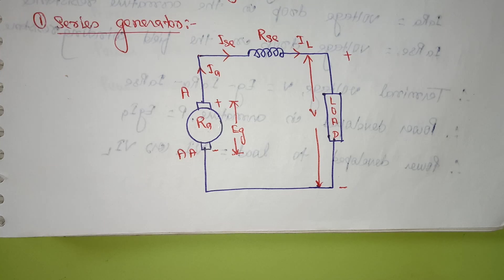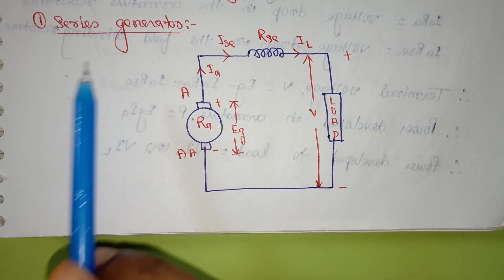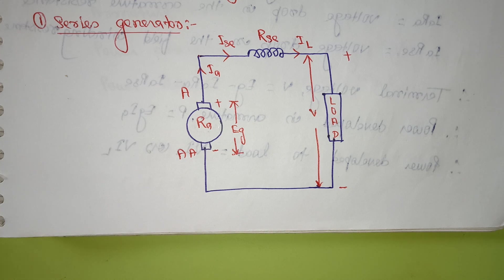Hi friends, today I am going to discuss about the self-excited DC generator. The types of the self-excited DC generator are three types: series generator, shunt generator, and the compound generator. So first we'll see about the series generator.